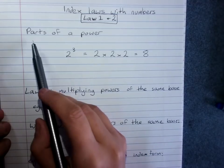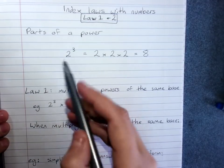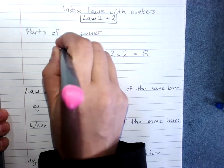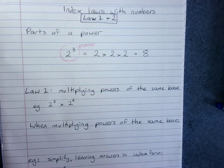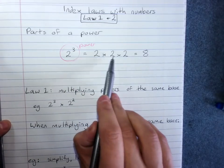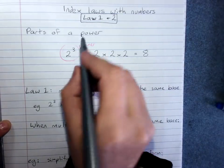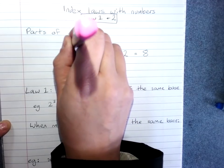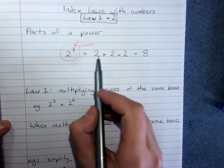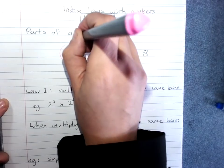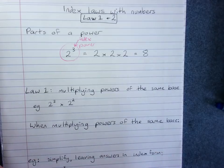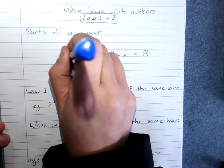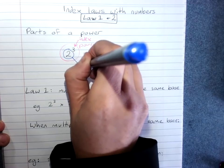We have to start by looking at what the different parts of a power are. This whole thing is a power. This means 2 times 2 times 2. So the 3 — the number of times that we are multiplying 2 by itself — is the index, or it can be called the exponent. And the 2, the number that's getting multiplied by itself, is the base, or the base number.